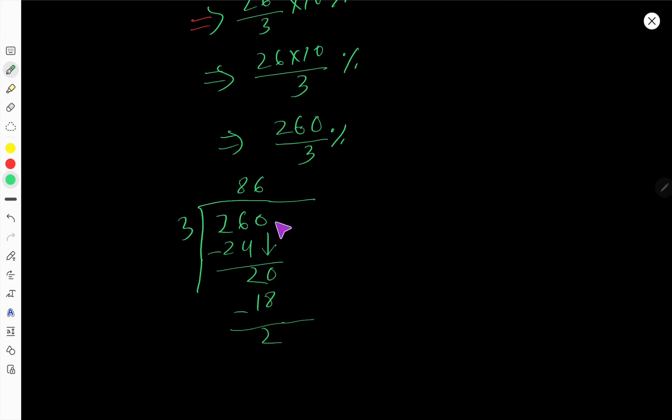We can take the decimal here and add any number of 0s. Bring down this 0 and place the decimal. 3 goes into 20, 6 times, so 18. Subtract to get 2, bring down this 0.